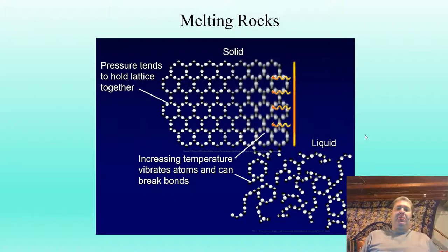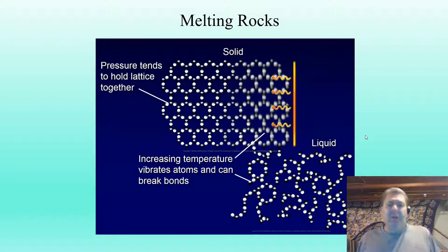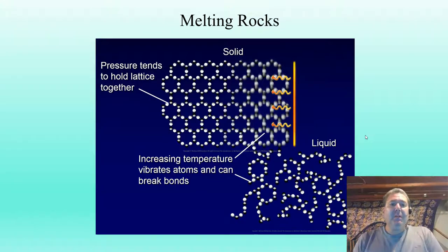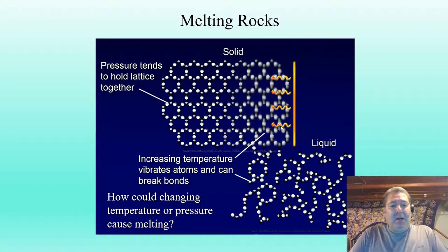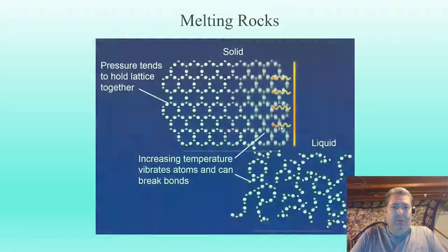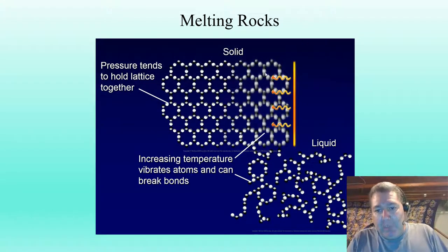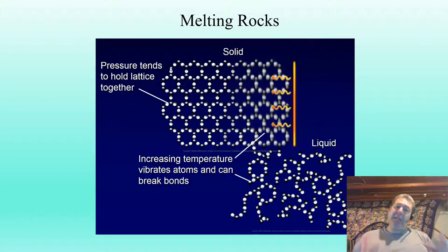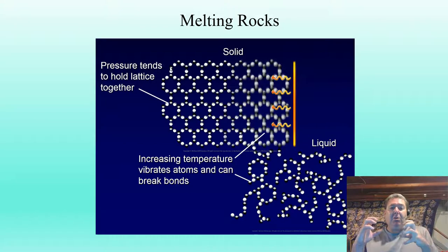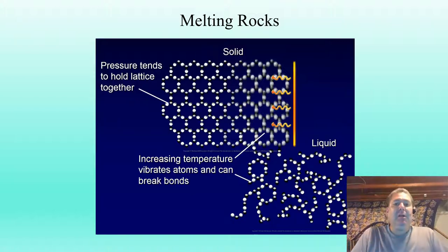We've already discussed how to form igneous rocks through crystallization, but how do we melt them in the first place? So here we have a solid deep in the earth. Heat is being applied, but it's staying in a solid form because it's under pressure. The rock deep in the earth is under pressure, which gives it more resistance to heat and allows it to stay solid at higher temperatures.